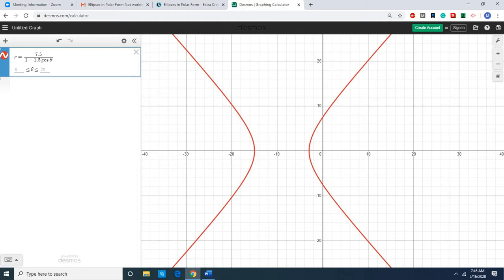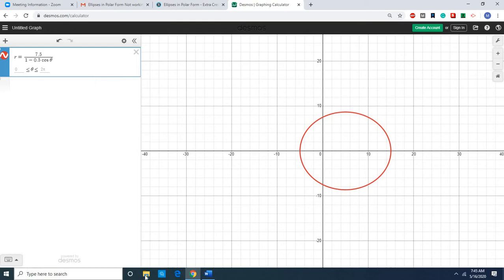Notice that this number here in front of the theta, the coefficient of the theta, is greater than 1. When that coefficient is less than 1, we have an ellipse. When the coefficient is greater than 1, we have a hyperbola. That's it for this video.